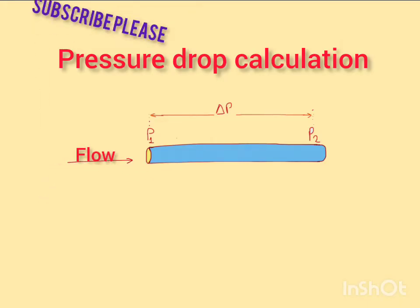Pressure drop is a term used to describe the decrease in pressure from one point in a system to another. In fluid systems, pressure drop occurs due to the resistance of the fluid to flow through the pipe. This resistance is commonly referred to as friction loss.